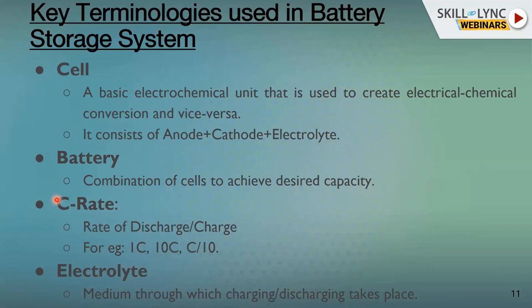To understand C-rate: if a battery has a 65 Ah charge capacity, operating at 1C means it can discharge 65 amps for 1 hour. At 10C, it can supply 650 amps, but the discharge time decreases to 6 minutes — the more current demanded, the less time the battery lasts. At C/10, it discharges at just 6.5 amps but lasts 10 hours. Note that this is not exactly a linear relationship — at 10C the battery may exhaust in under 6 minutes, while at C/10 it may last over 10 hours.